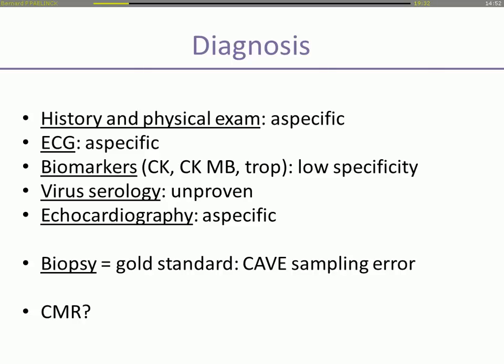Endomyocardial biopsy is still the gold standard, including immunohistochemistry. However, this technique could be hampered by a sampling error.